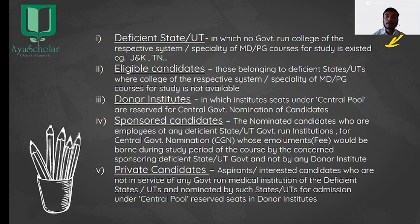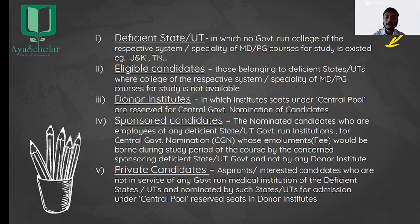We have two kinds of eligible candidates: sponsored candidates and private candidates. Sponsored candidates are employees of any deficient state or union territory government run institution for Central Government Nomination, whose emoluments or fee would be borne during the study period by the concerned sponsoring deficient state or union territory government. Private candidates are aspirants who are not in service of any government run medical institution of the deficient state or union territories, and are nominated by such states and union territories for admission under central pool reserved seats in donor institutions.